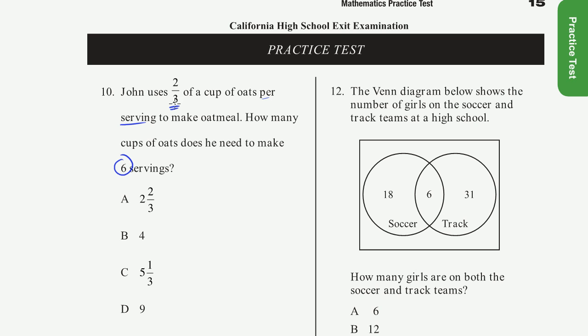So he uses two-thirds per serving, and he's going to have six servings. So it's going to be six times, for every serving there's two-thirds, so it's going to be six times that. So it's going to be two-thirds per serving.